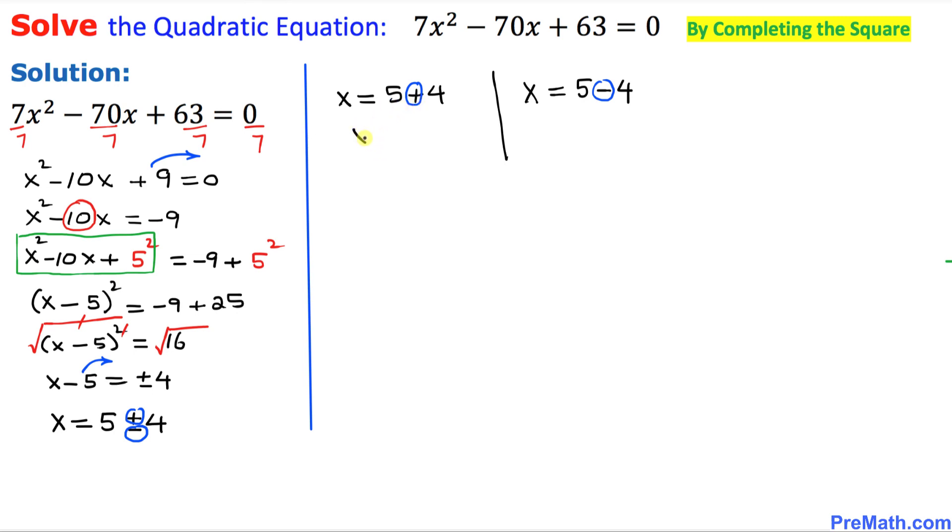So now 5 plus 4, x equal to 9 is one of our solutions, and x equal to 1 is our another solution. Thus once again our solution turns out to be x equal to 1 and x equal to 9, and that is our final answer.